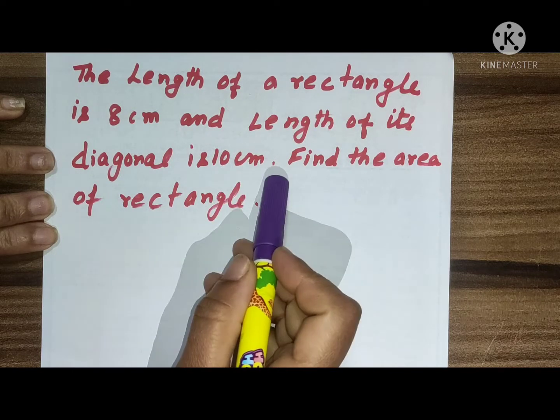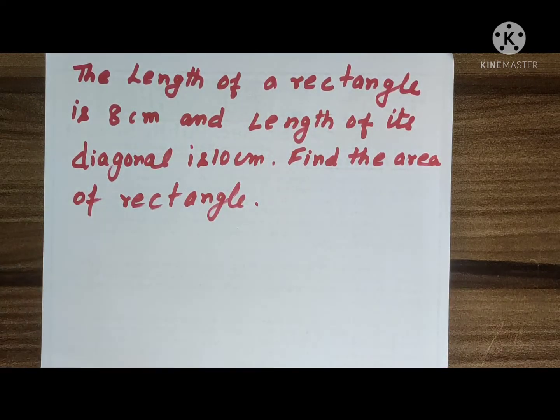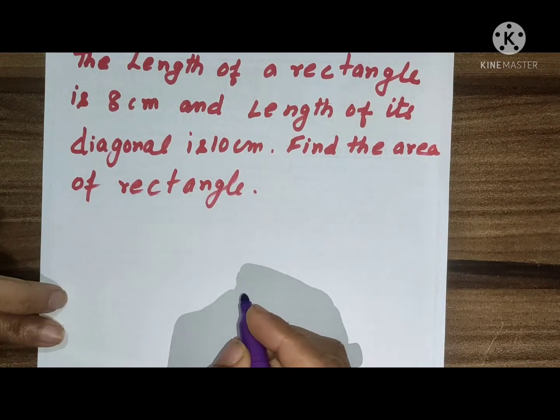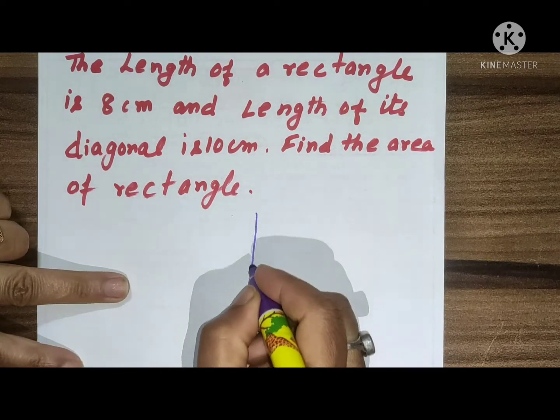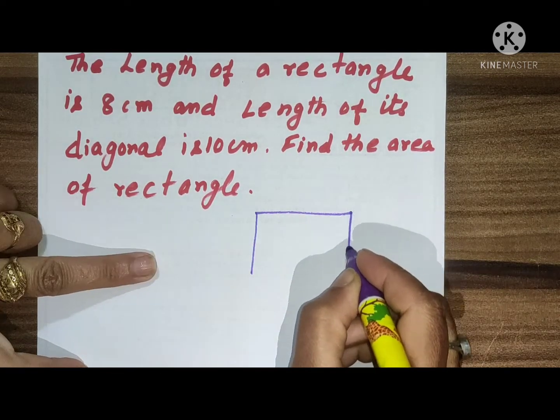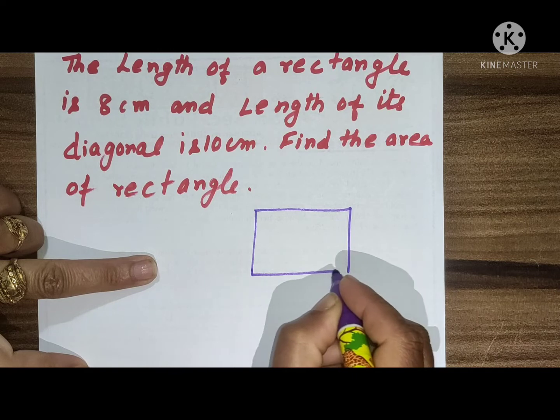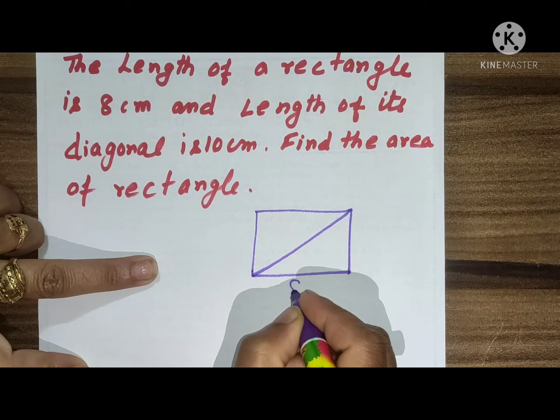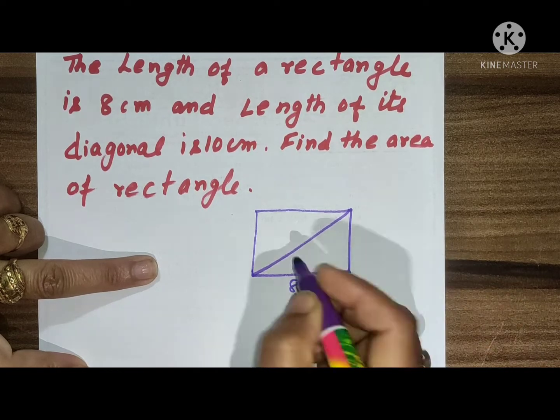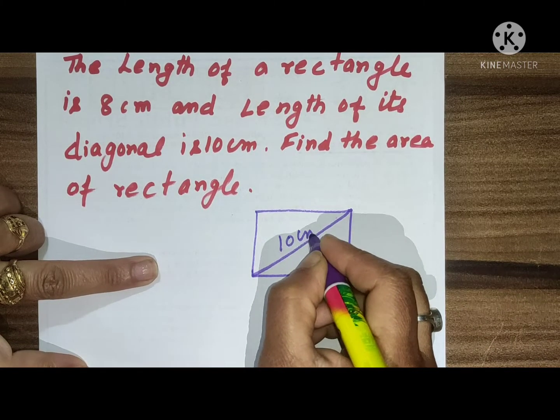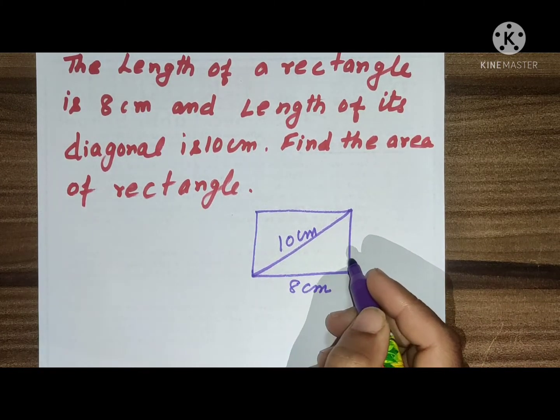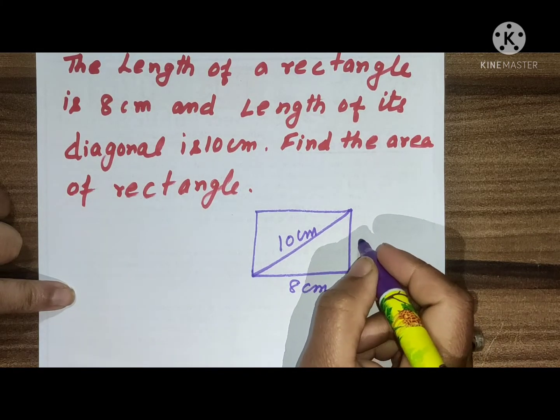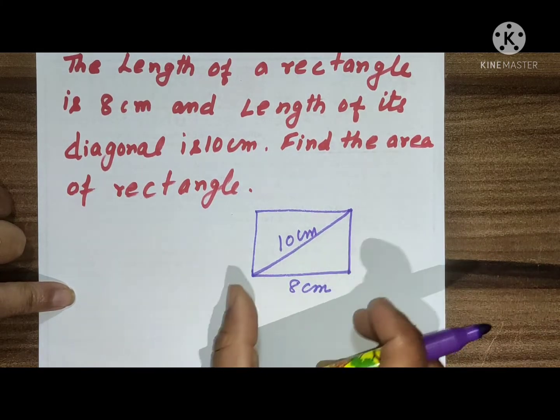its diagonal is 10 centimeters. Find the area of the rectangle. So here a rectangle is given whose length is 8 centimeters and diagonal is 10 centimeters, but to find the area we need to know the breadth. Here breadth is not given